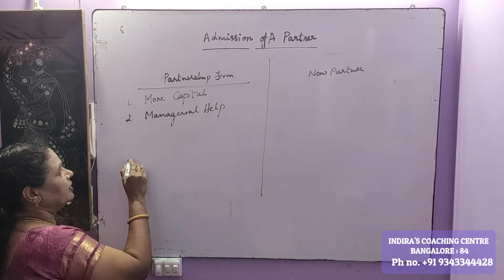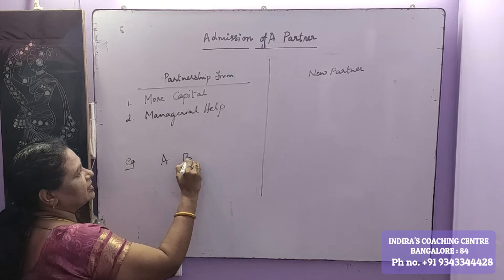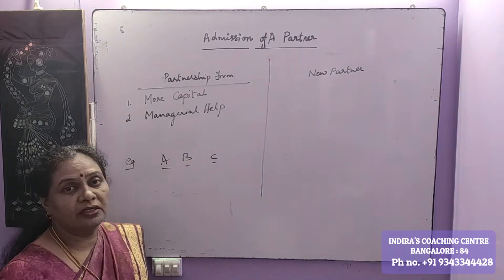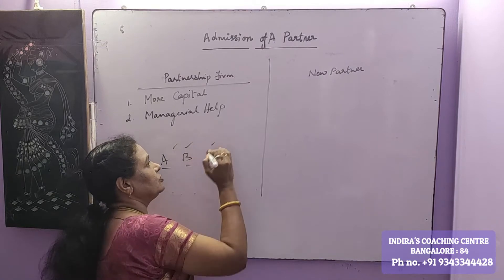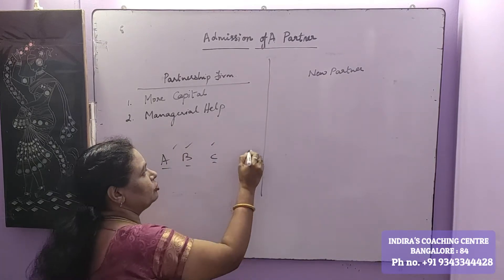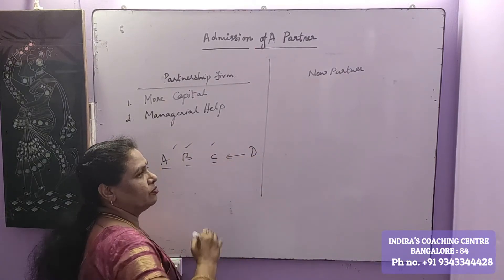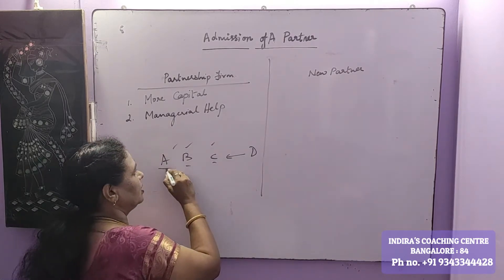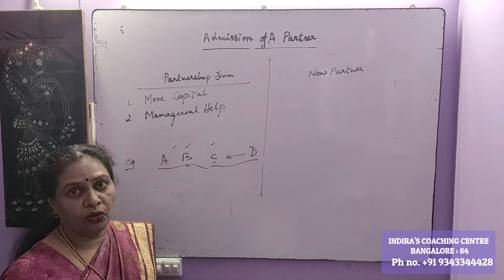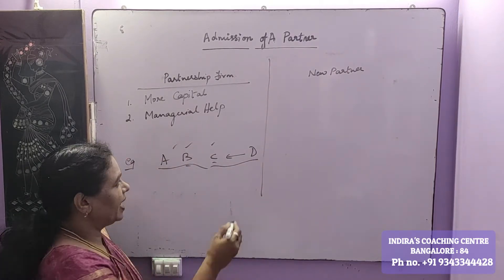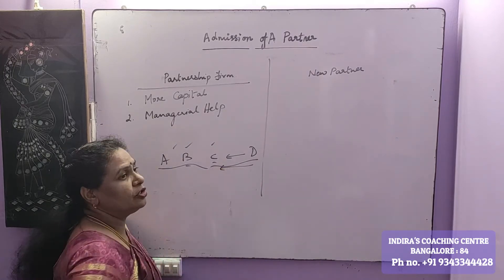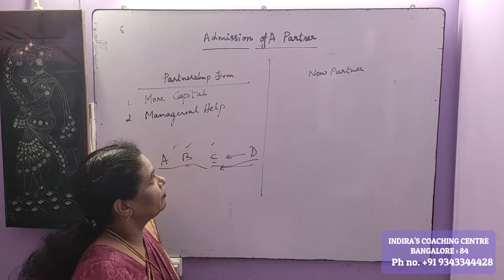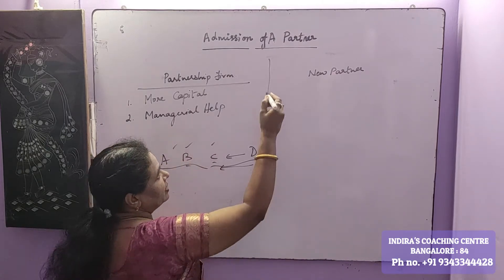For example, if A, B, and C are partners and all three are active partners, the people managing the business is only three. Now suppose a new person named D enters into the business — the whole work is divided by four, so automatically you get another person to share your responsibilities.